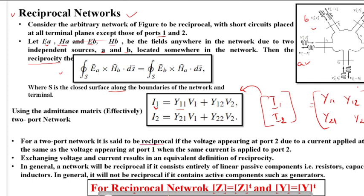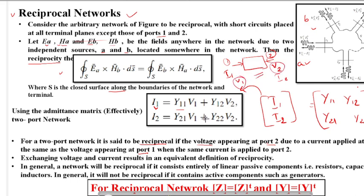For a two-port network, it is said to be reciprocal when the voltage appearing at port 2 due to a current applied at port 1 is the same as the voltage appearing at port 1 when the same current is applied to port 2. If I1 current is at port 1 and V2 voltage results, and then I2 current is at port 2 and V1 results — if V1 equals V2, the network is called a reciprocal network. Exchanging voltage and current gives an equivalent definition of reciprocity.